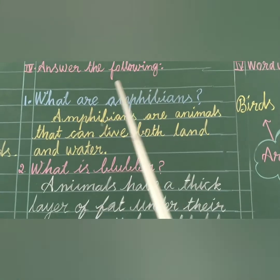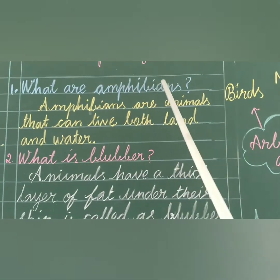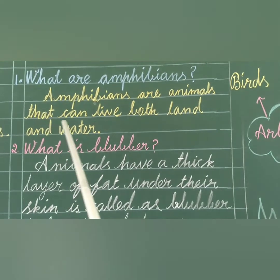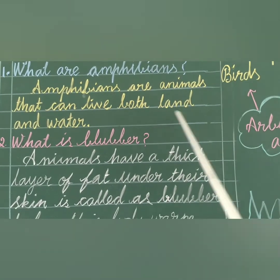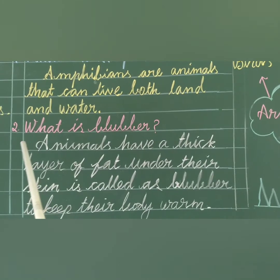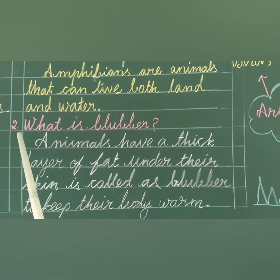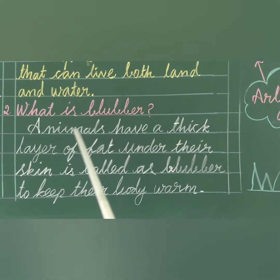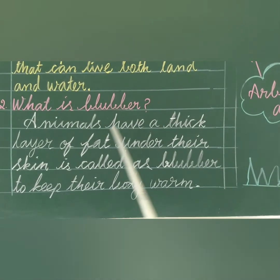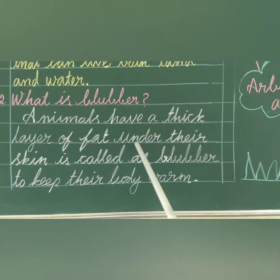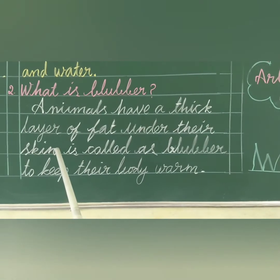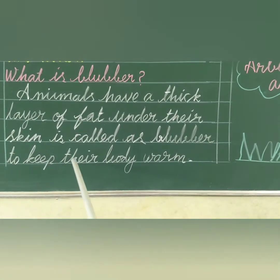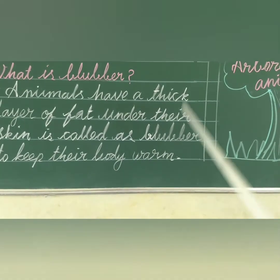Answer the following. What are amphibians? Amphibians are animals that can live both on land and in water. What is blubber? Animals have a thick layer of fat under their skin, which is called blubber, to keep their body warm.